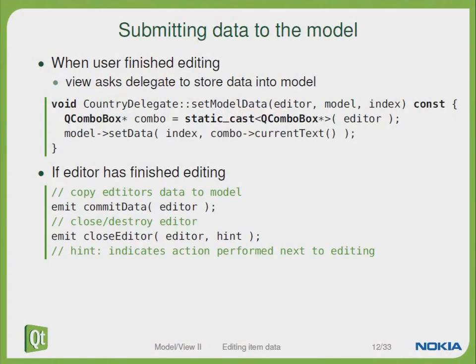Whenever the user finishes editing we have to submit the data to our model. The setModelData function will be invoked and we set the correct data to our model. If the editor has finished editing, we emit the commitData signal which copies the editor's data to the model, and then emit the closeEditor signal so that the editor will be closed.